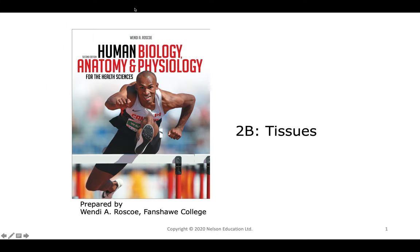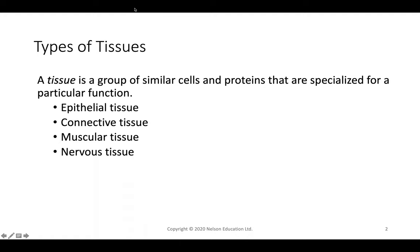Welcome back to human biology at Chaminade University. Today we will be discussing tissues and their organization. We have four major types of tissues: epithelial tissue, connective tissue, muscular tissue, and nervous tissue. A tissue is defined as a series of cells that have similar shape and function, specialized for a particular purpose.